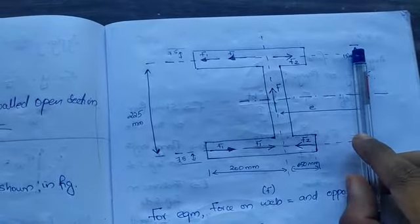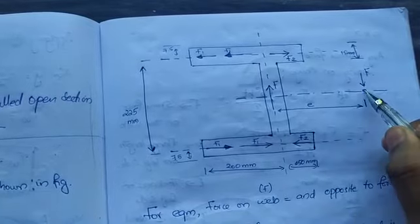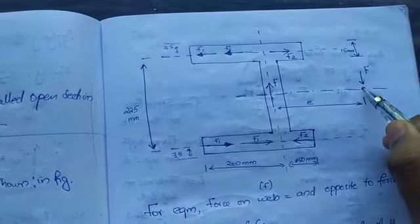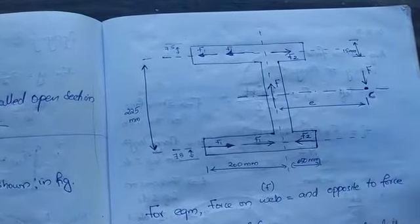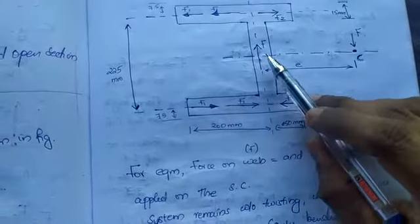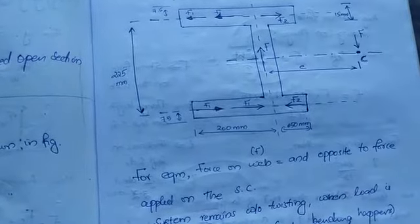F at a point which is e distance from here. I am assuming this as the shear center C and applying this force F. Now I need to find out the distance from this point to the point C.